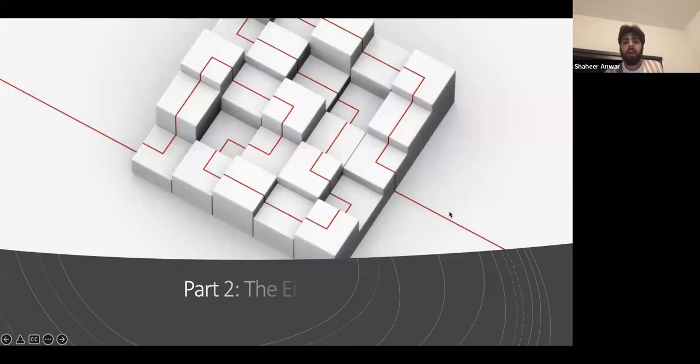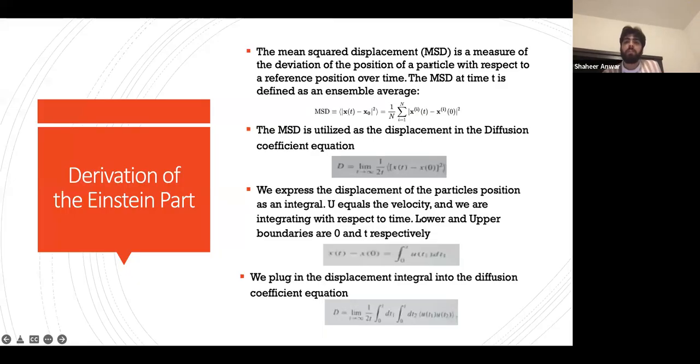Now, going on to the Einstein part. The mean squared displacement (MSD) is a measure of the deviation of position of a particle with respect to a reference position over time. The MSD at time t is defined as an ensemble average. The MSD is utilized as the displacement in the diffusion coefficient equation.